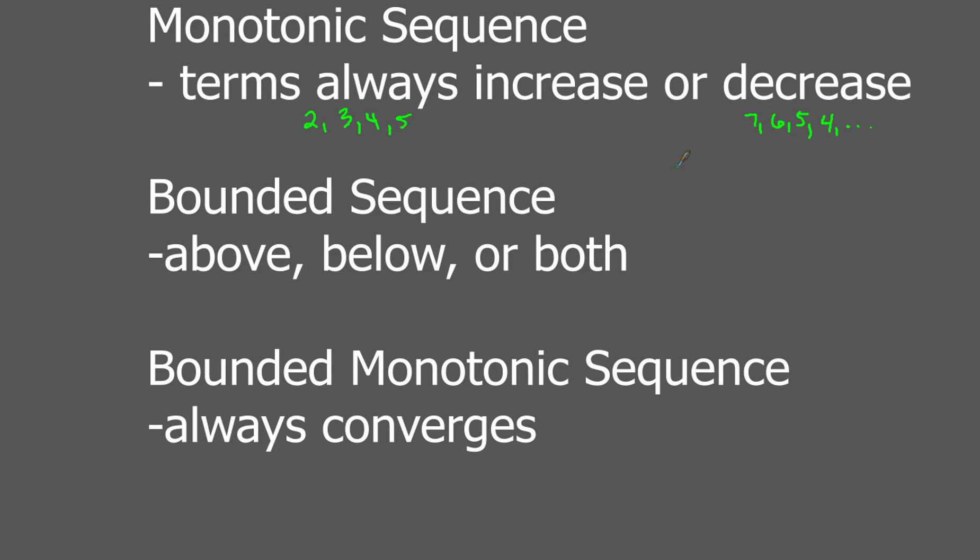A bounded sequence just means there's a limit either above or below or potentially both. And you'll see an example that does have both, so hang on for that. And then if you have a sequence that is both bounded and monotonic, it will converge to a particular number.